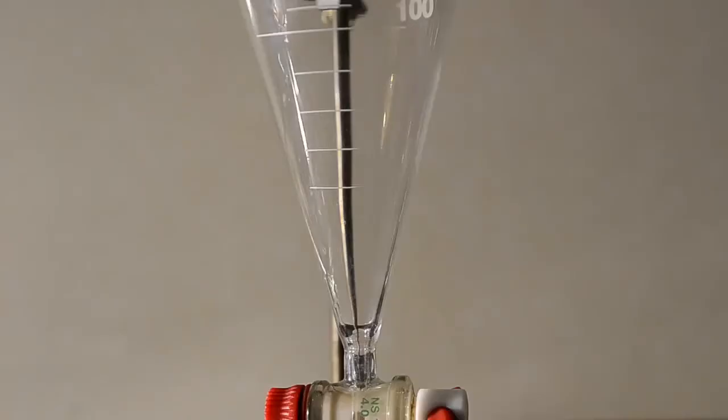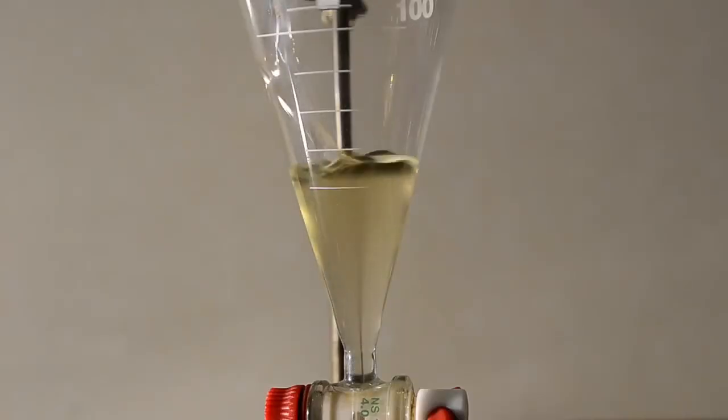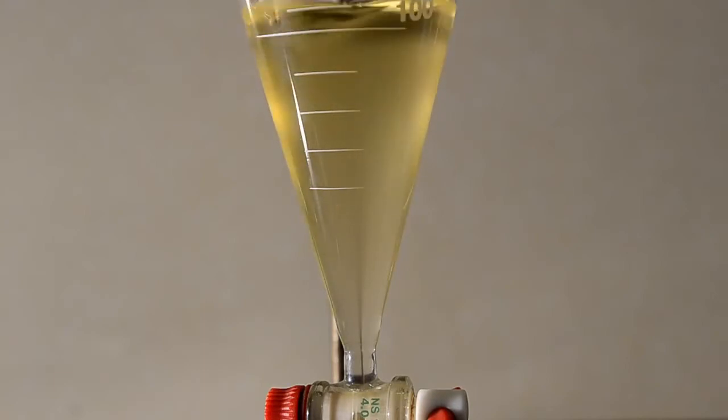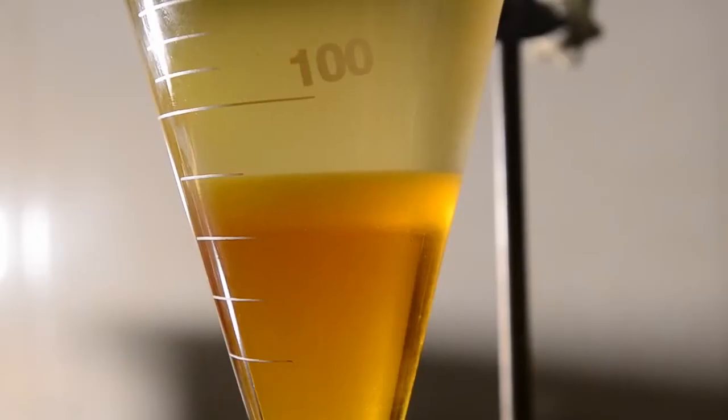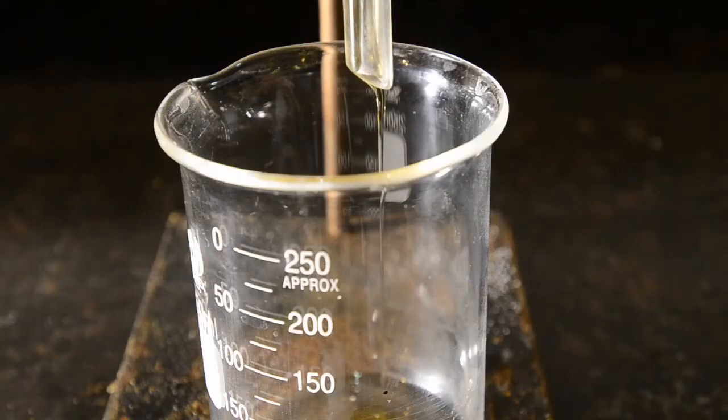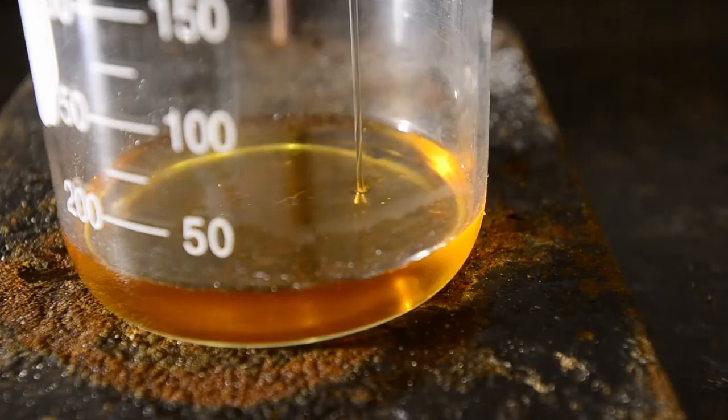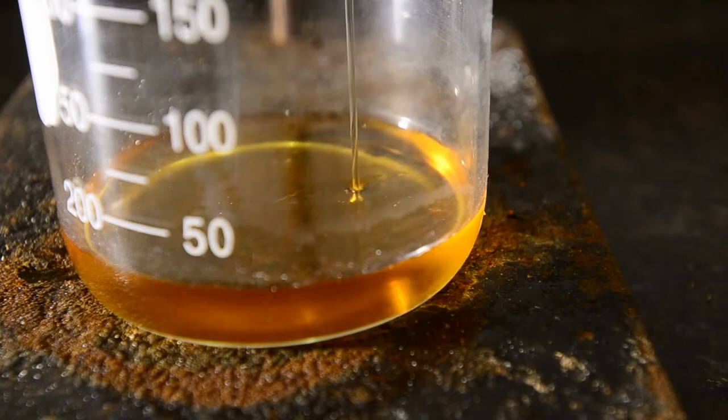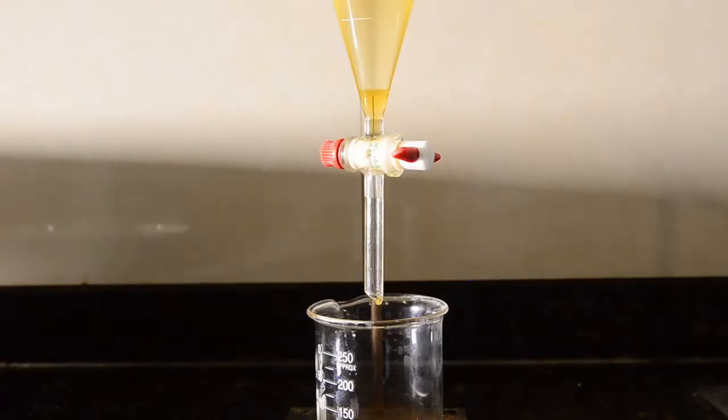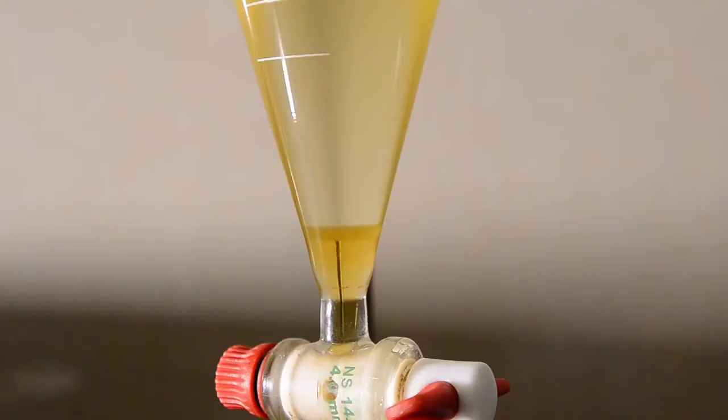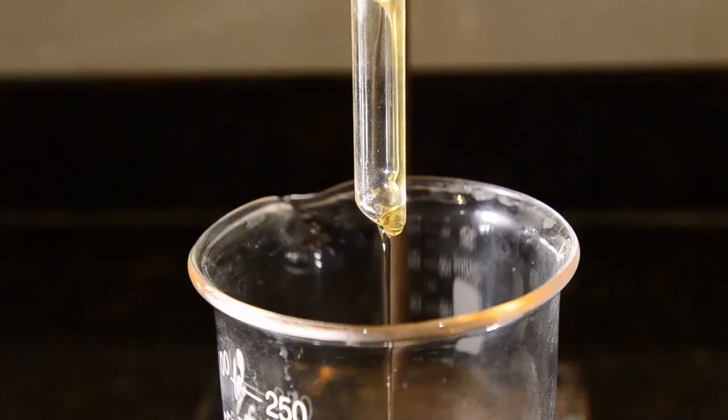Pour the mixture into a separating funnel. It just fits the 500 ml funnel. Allow the bottom layer of glycerol to separate completely. Then remove it into a beaker. It's pretty viscous and you'll find that if you leave the ester layer for a while some more will drop out of suspension in the funnel. Allow to separate as much as you can, and then drain off the last bit of glycerin.